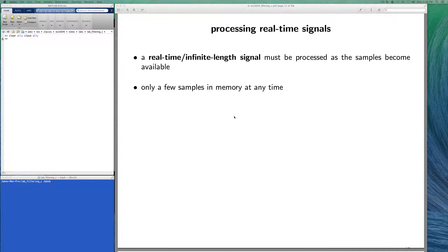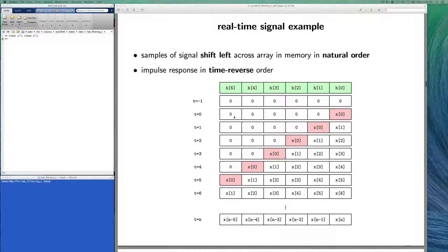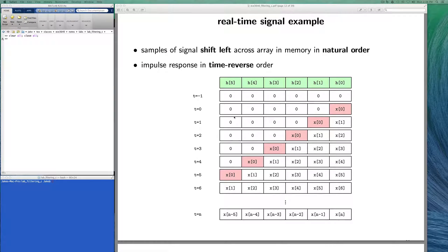These signals have to be processed as the samples become available. We can only have a few samples in memory at any given time. I have several diagrams like the one shown here to illustrate how the convolution or the filtering is done.